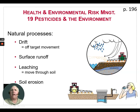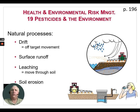There are also natural processes affecting pesticide movement. Drift is the off-target movement of a pesticide. Surface runoff occurs during heavy rains when a pesticide is washed away with surface water. Leaching is when the pesticide moves down through the soil. Soil erosion is when a pesticide attached to soil particles moves with that soil being eroded off a field by wind or water.